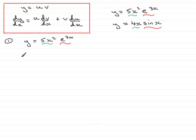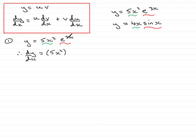Let's do the first example: y equals 5x squared e to the 3x. We go straight into dy by dx. dy/dx equals u — that's the first part, 5x squared, put in brackets — multiplied by dv/dx. We differentiate e to the 3x with respect to x. The differential of e to the ax, where a is a constant, is always a times e to the ax. So here that's 3e to the 3x.